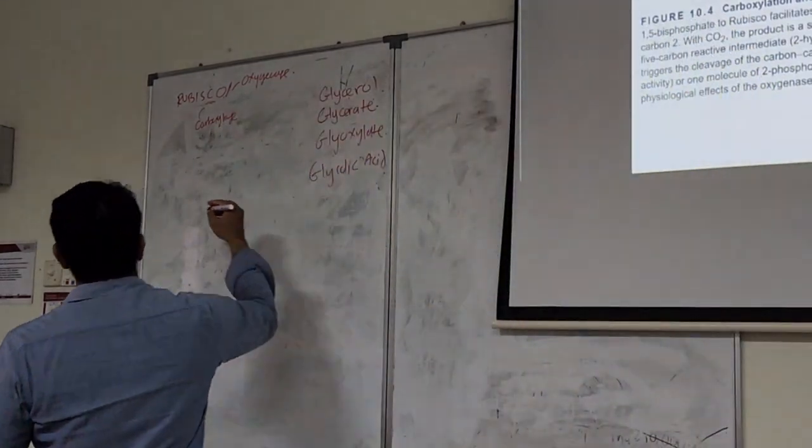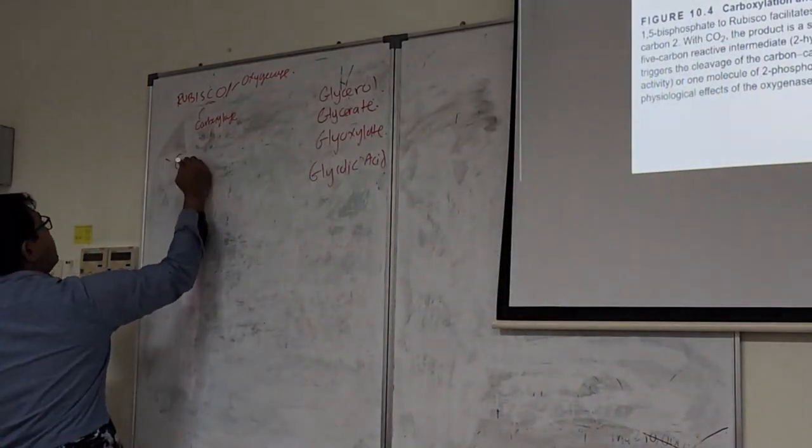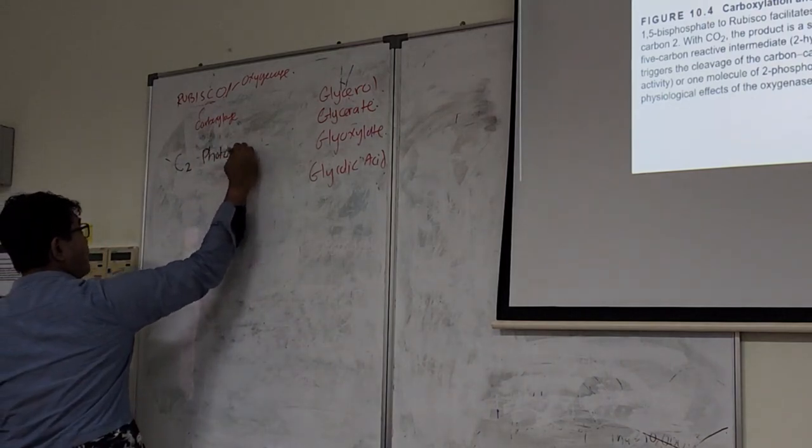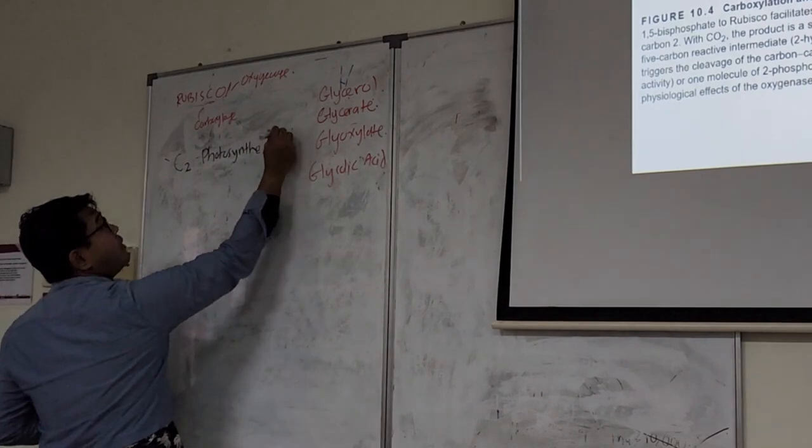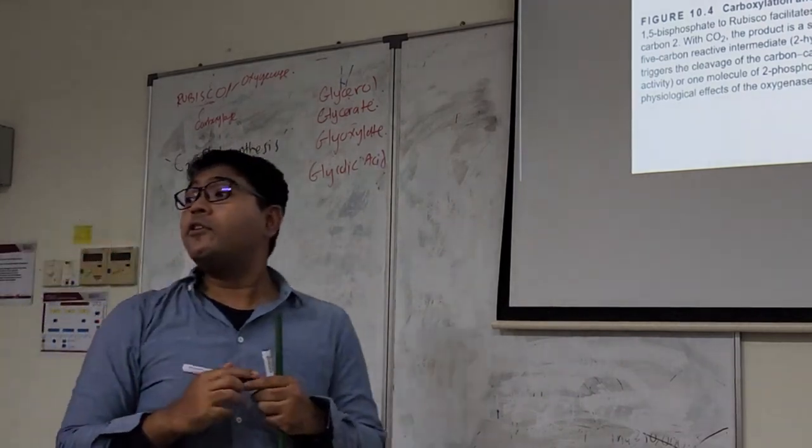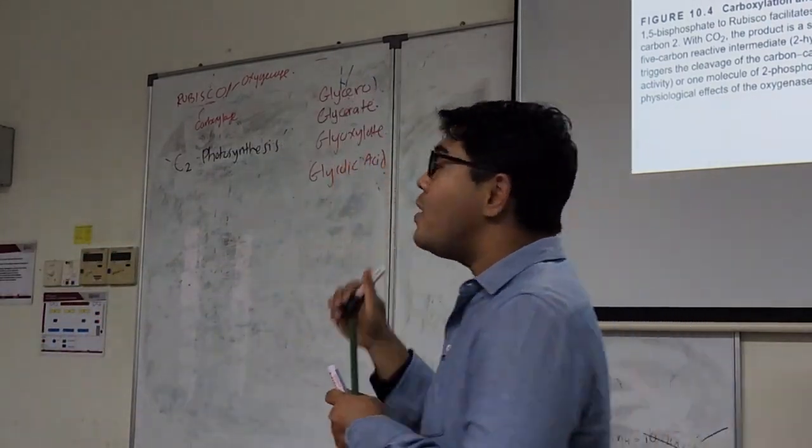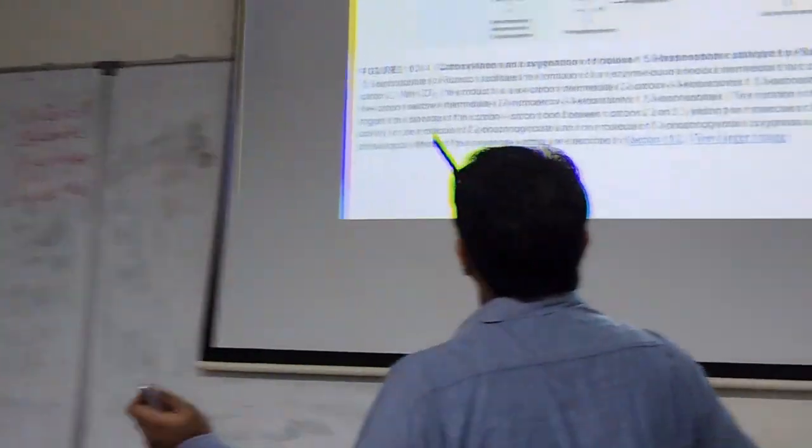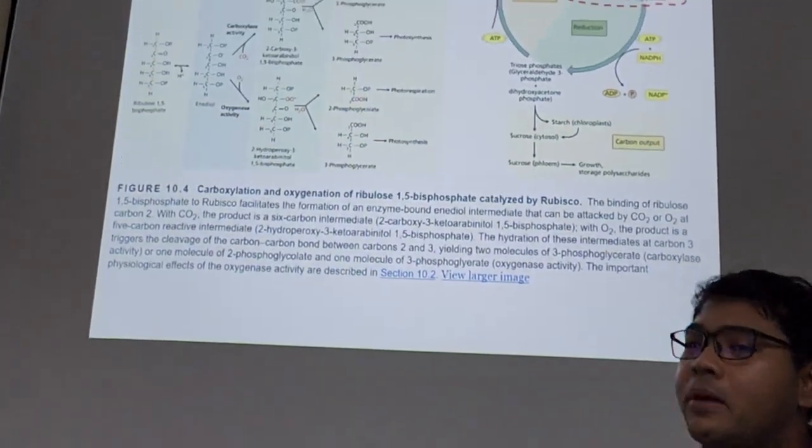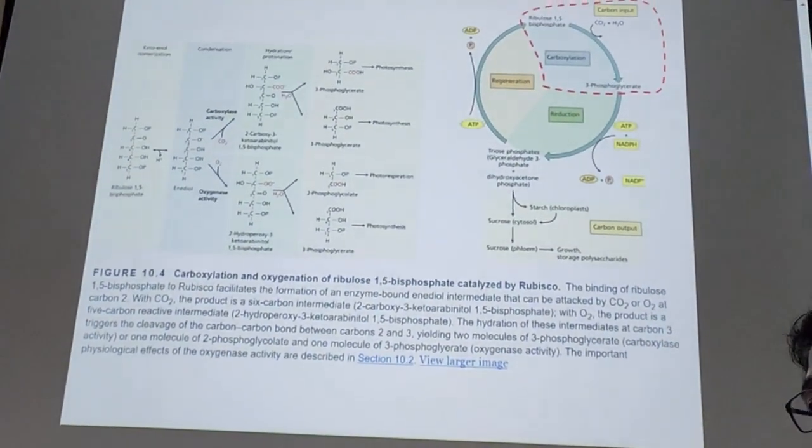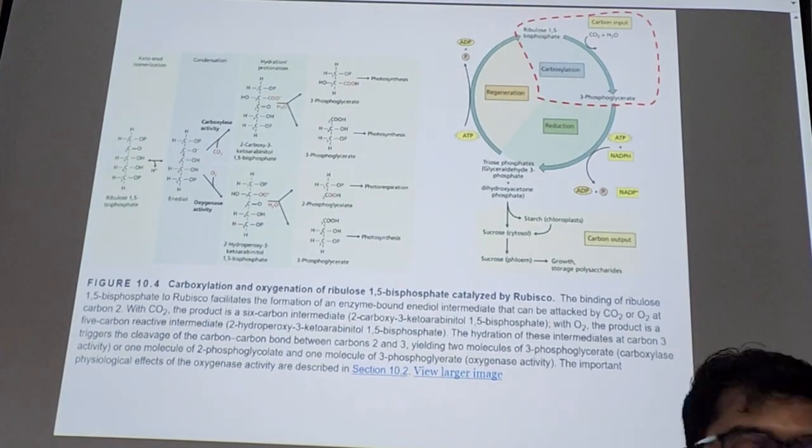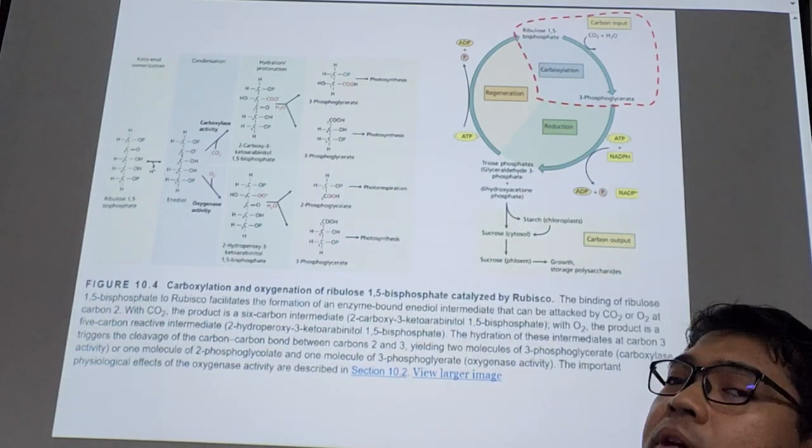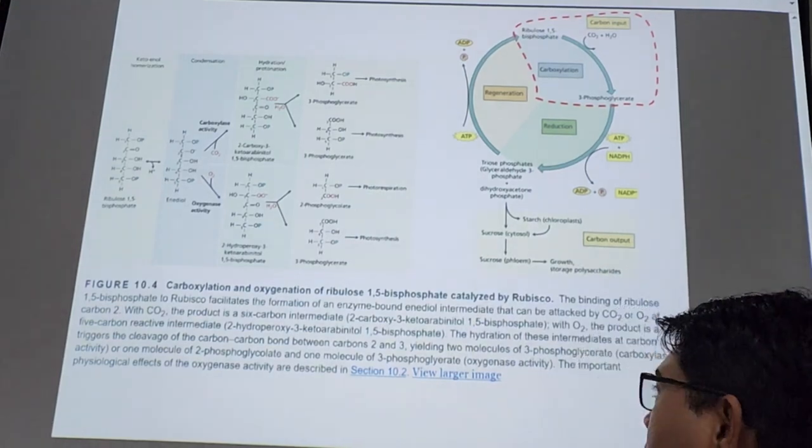This phosphoglycolate has got this synonym, we call it the C2 photosynthesis. This is why you learn about the C3, C4, and CAM photosynthesis. That's another one, C2 photosynthesis. Who is the C2 photosynthesis? This thing, photorespiration. So photorespiration is actually the C2 photosynthesis. Is it really photosynthesis? No, it's actually carbon salvage pathway.